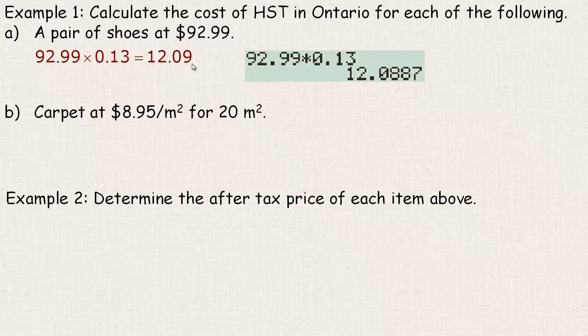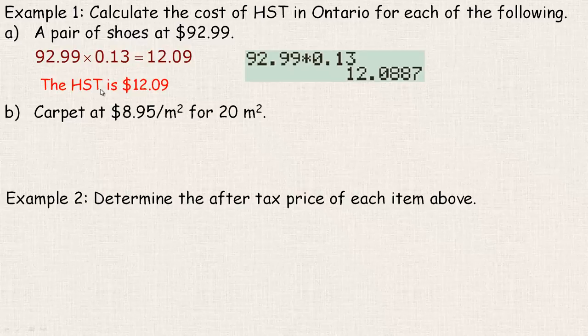Now depending on whether you're paying with a debit card, credit card, or cash — there aren't any pennies anymore — so if it was cash, then they would charge you $12.10. So the HST is $12.09, or $12.10 if you were paying cash.